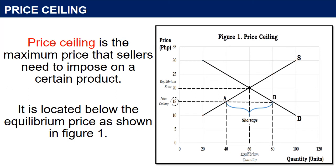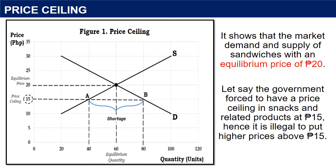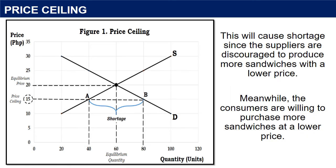Price ceiling is the maximum price that sellers need to impose on a certain product. It is located below the equilibrium price, as shown in Figure 1. The graph shows the market demand and supply of sandwiches with an equilibrium price of 20 pesos. Let's say the government forces a price ceiling on snacks and related products at 15 pesos; hence, it is illegal to put higher prices above 15 pesos. With a price ceiling of 15 pesos, quantity demanded increases from 60 to 80 sandwiches while quantity supplied drops from 60 to 40 sandwiches. This will cause a shortage since suppliers are discouraged from producing more sandwiches at a lower price, while consumers are willing to purchase more sandwiches at a lower price.